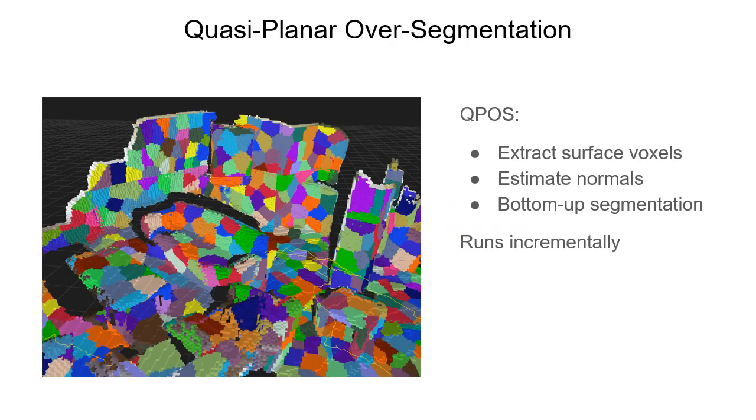We aim to reduce the map cardinality by grouping voxels into segments. We propose a novel quasi-planar over-segmentation method relying on surface normals. It processes the surface voxels in an incremental manner, producing a small set of segments.